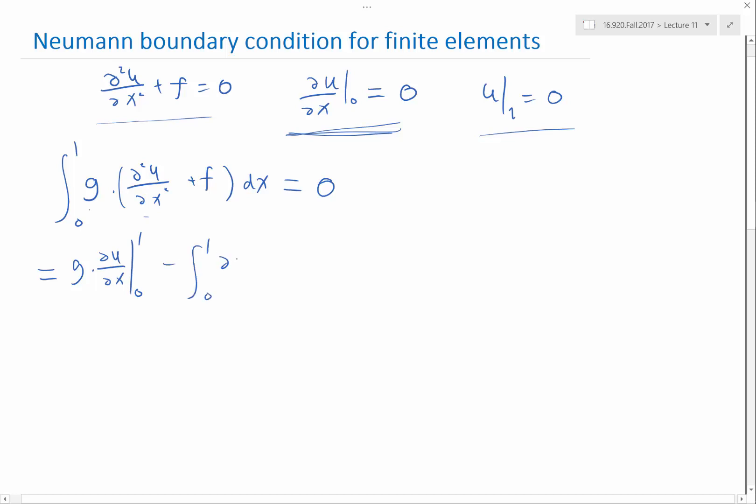you have a negative sign, dg dx, du dx. So you take the one order of derivative from this u and put it on g. So that's what makes the requirement for differentiability weaker in the weak form. And then you still have this integration of g times f dx, right?